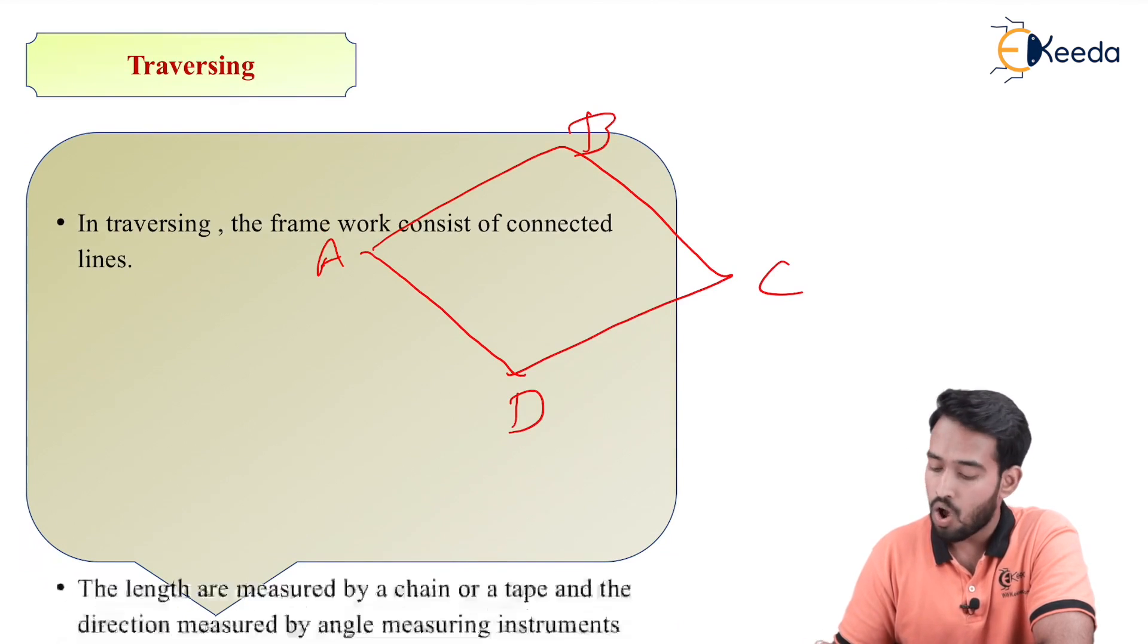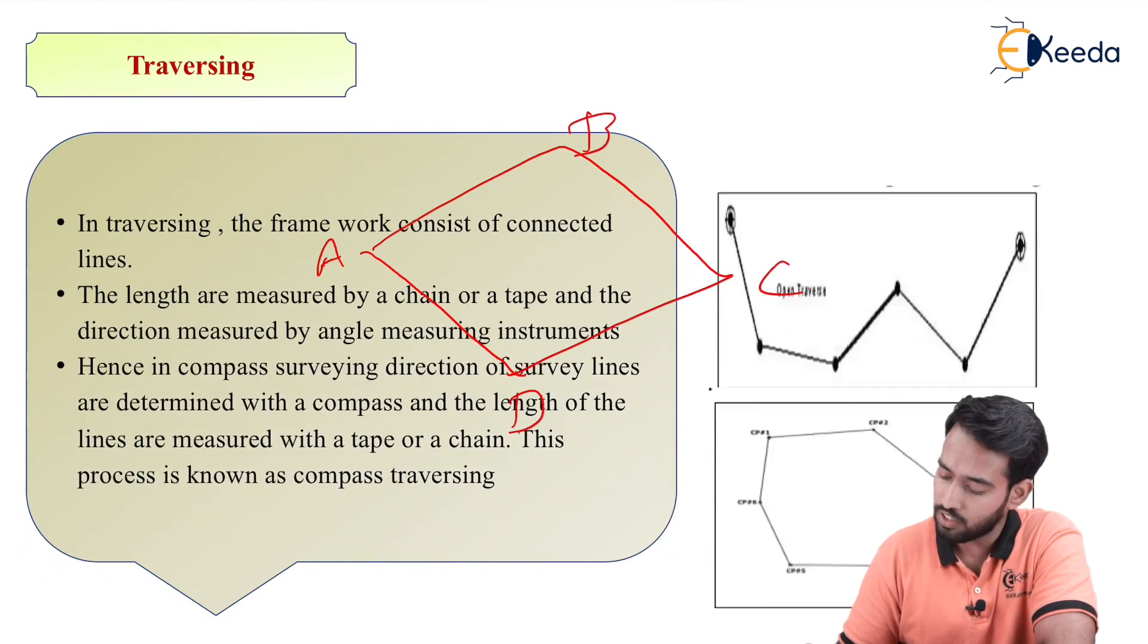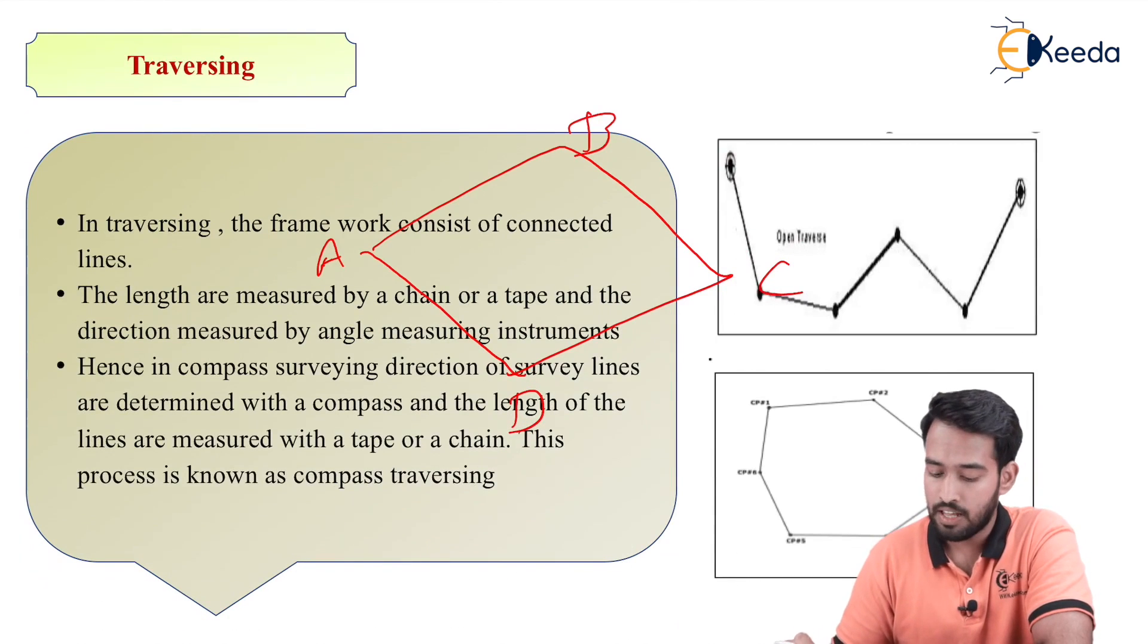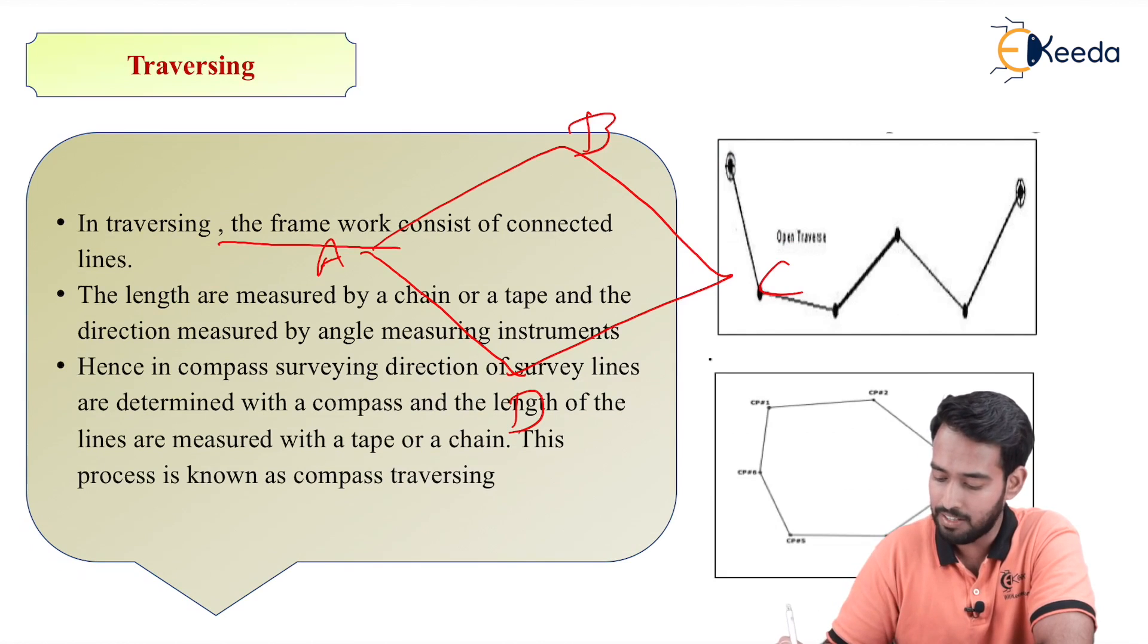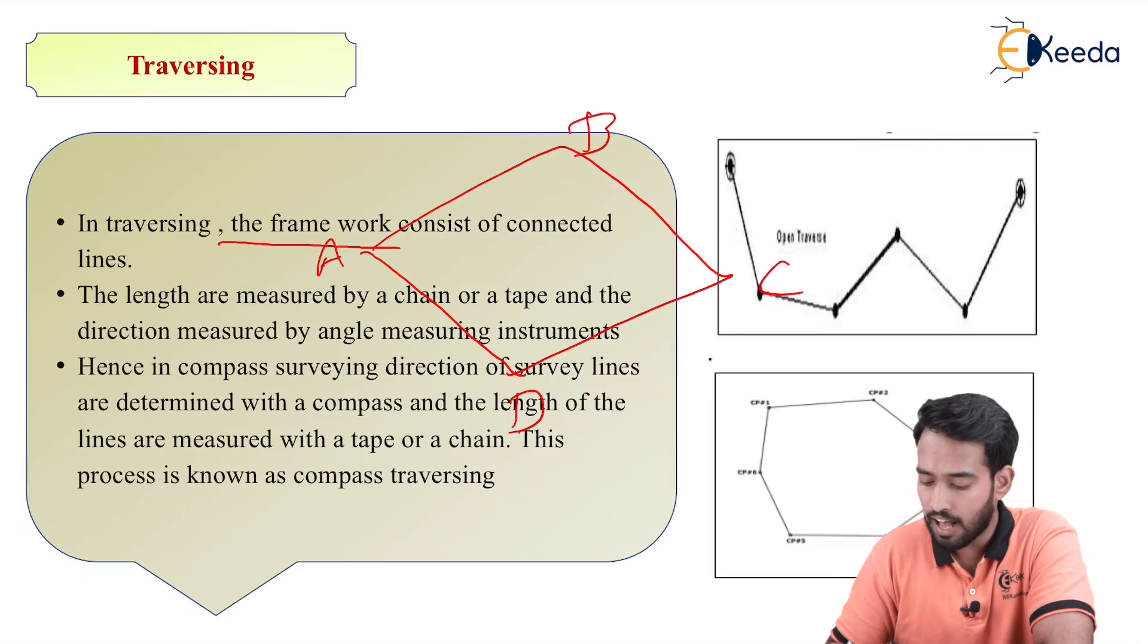Now in traversing, it is nothing but a framework consisting of connected lines. As you can see, A, B, C, D are the connected lines. The lengths are measured by a chain or a tape.